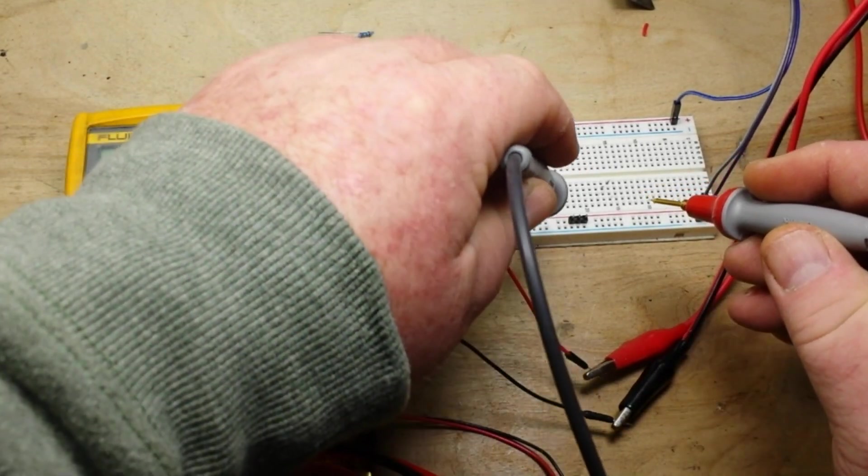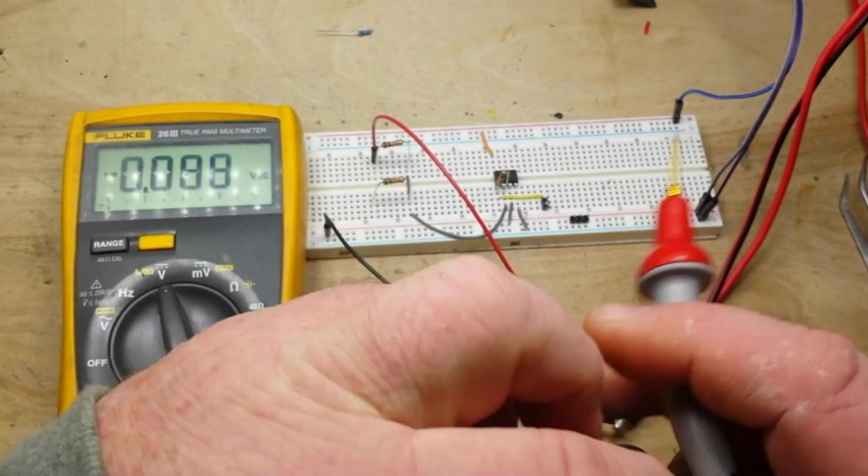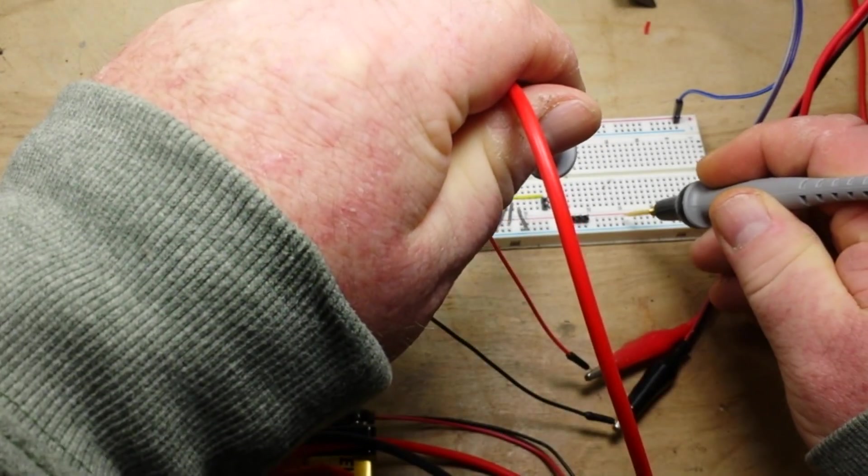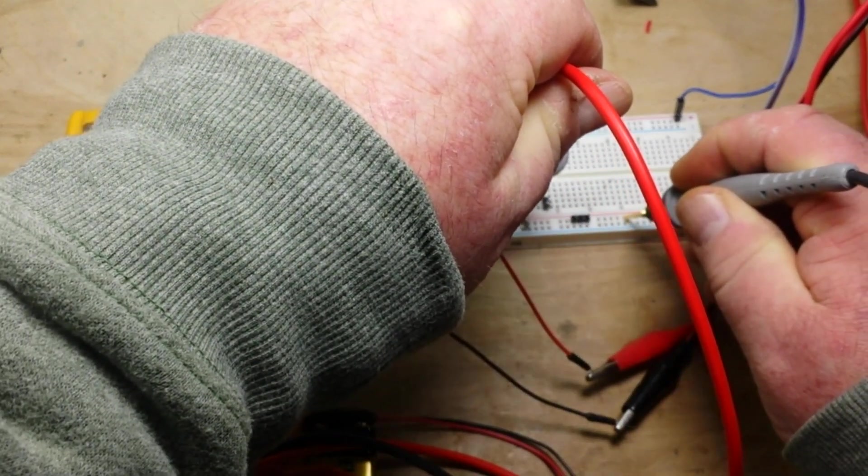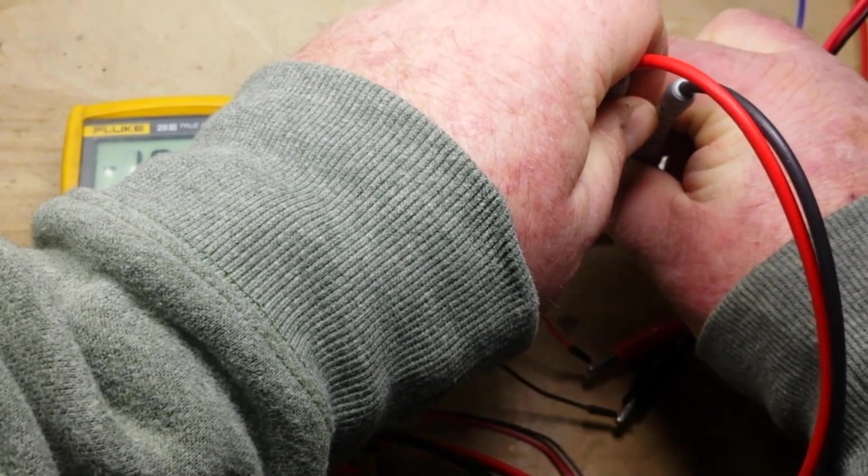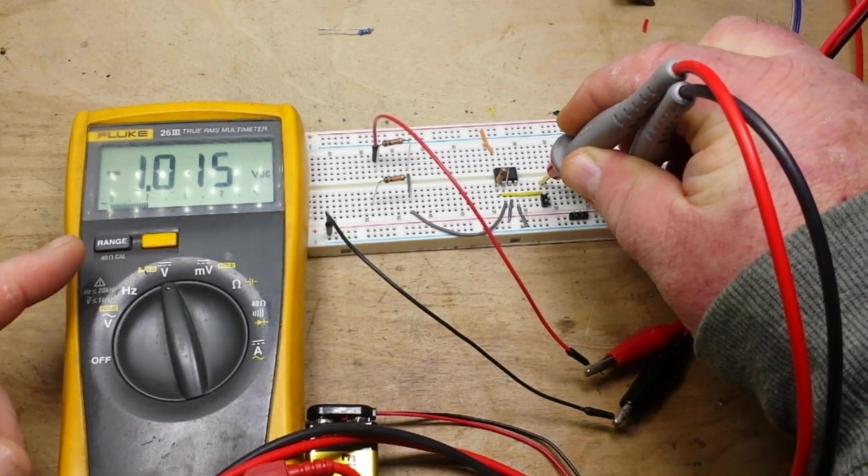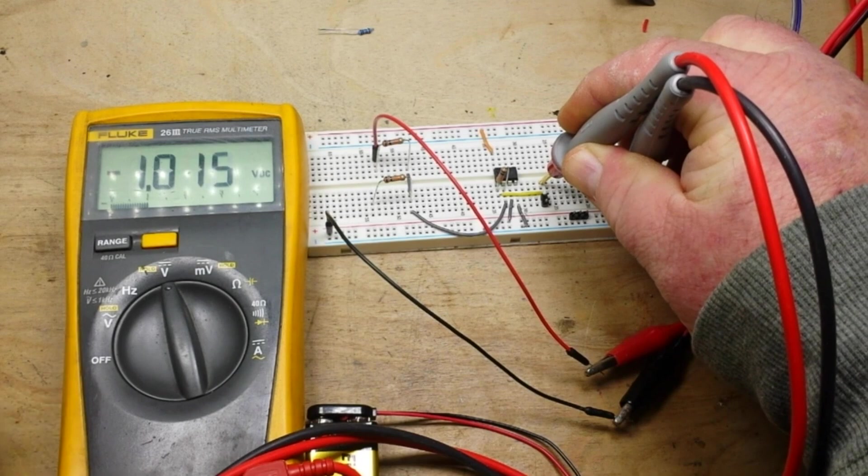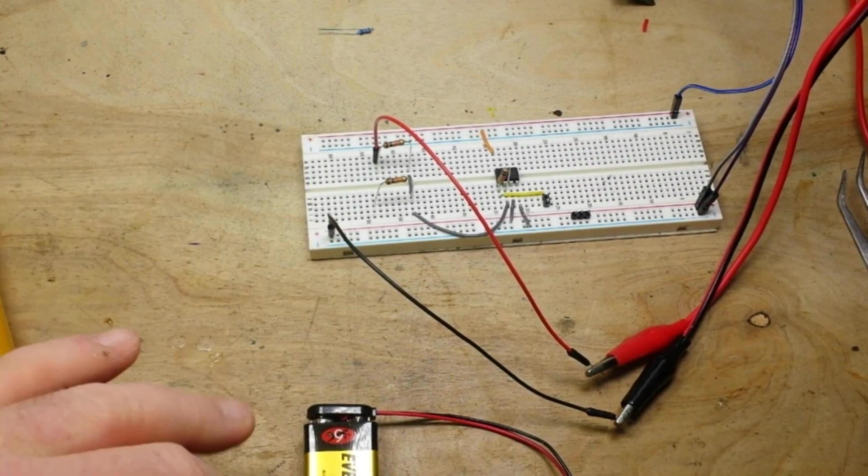Now that's 1 volt, and if we take a look at the output here, pardon my fingers, we get negative 1 volt because it's an inverting amplifier.